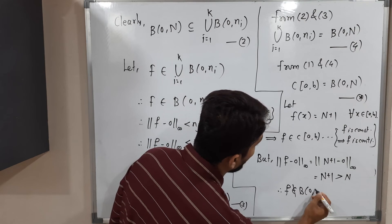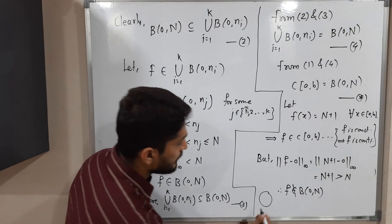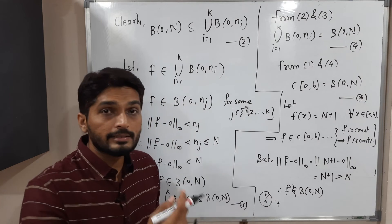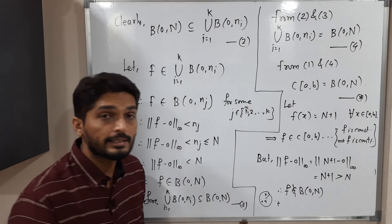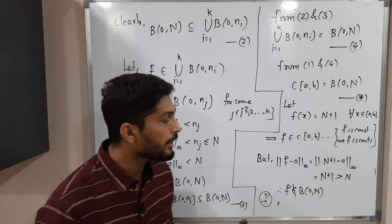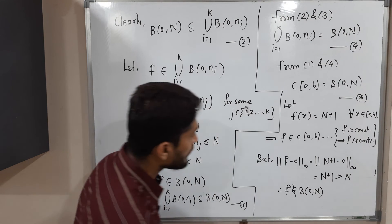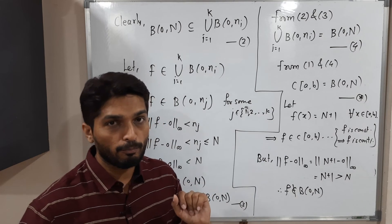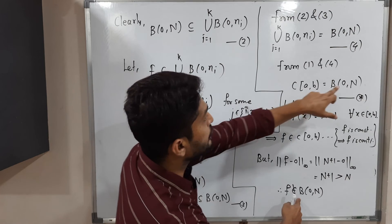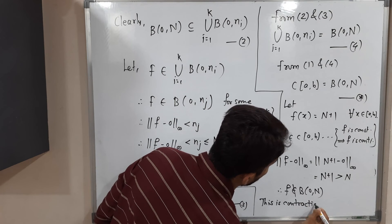Since the distance of F from zero is greater than N, F lies outside the ball B(0, N). So F is a member of C[A,B] but F is not a member of B(0, N). This contradicts our result star, which said C[A,B] = B(0, N). So we have a contradiction.